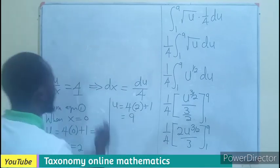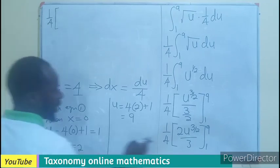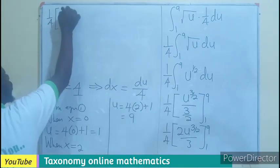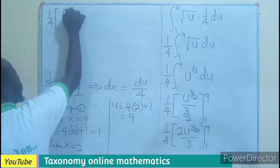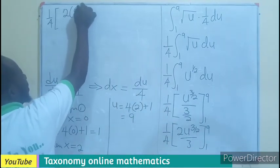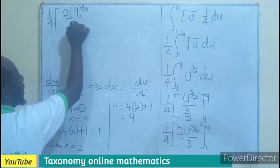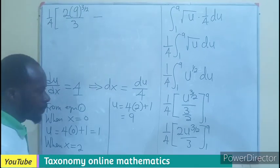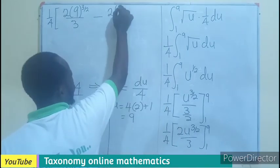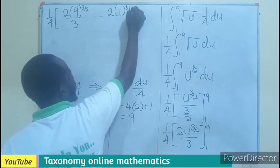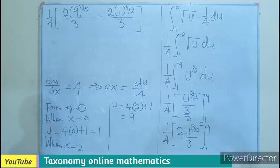So, from here, I'll be having 1 out of 4, multiplying 2, U which is now going to be 9. So, 9 exponent 3 out of 2, all over 3, minus 2U which is now going to be 1, 3 out of 2, all over 3, still multiplying 1 out of 4.